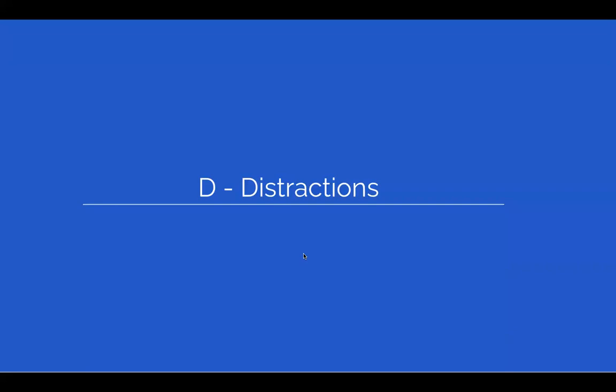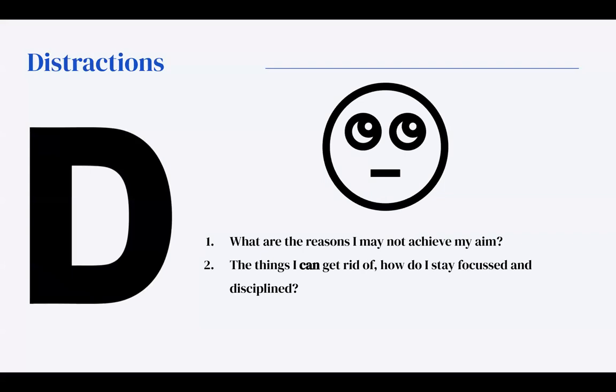The next is your distractions. This is an interesting one. Your distractions are very close to your constraints. And I separated them for a reason. There are also the reasons you may not achieve your aim. But this time around. You can get rid of them. The question is. How do you stay focused and disciplined. So, now I'm going to go to Joshua. So, Joshua. What are your weaknesses? What are your distractions?